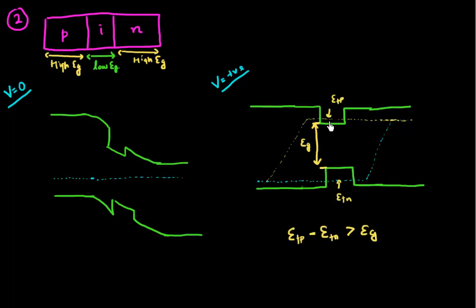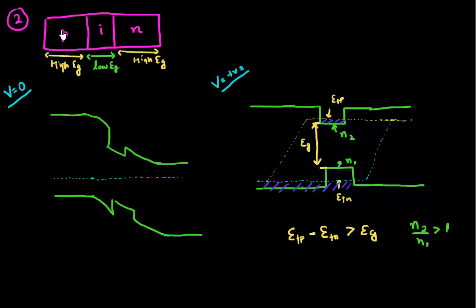Looking at all the occupied states: the states in the conduction band inside the low band gap material are occupied, so N2 is large, while the states in the valence band are empty, so N1 is small. Therefore N2 by N1 is greater than one. This is another way to achieve population inversion — in a PIN heterostructure diode with a low band gap material inserted between two high band gap materials. In this case, degenerate doping is not needed to achieve population inversion.